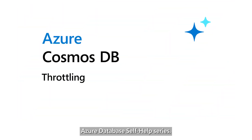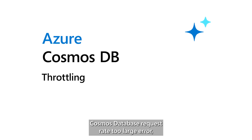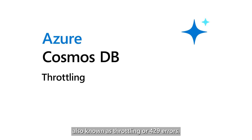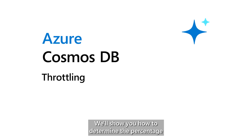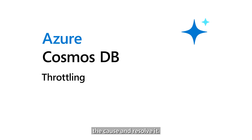Welcome to the Microsoft Azure Database Self-Help series. This video covers how to identify and troubleshoot Cosmos database the request rate too large error, also known as throttling or 429 errors. We'll show you how to determine the percentage of throttled requests out of the total requests, and then we'll show you how to identify the cause and resolve it.